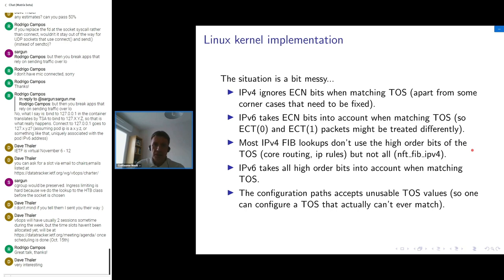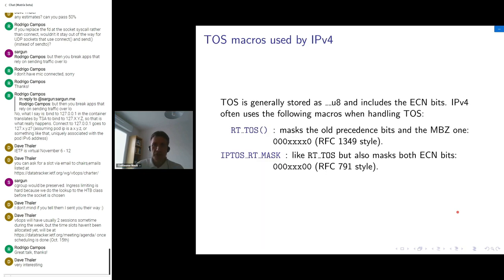For the higher-order bits, IPv4 ignores them most of the time, because some parts of the code take them into account. IPv6 is more consistent — it always takes all the bits into account when matching the TOS. Another effect of this messy implementation is that we can accept TOS values with IP route or IP rules that cannot actually match any packet. I will give some examples later.